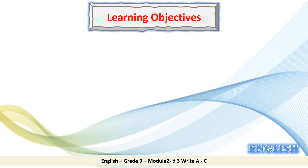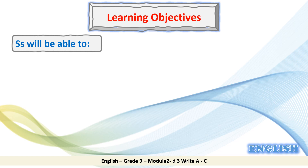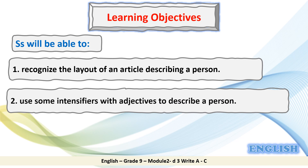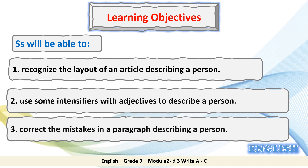Learning Objectives. At the end of this lesson, students will be able to: 1. Recognize the layout of an article describing a person. 2. Use some intensifiers with adjectives to describe a person. 3. Correct the mistakes in a paragraph describing a person.